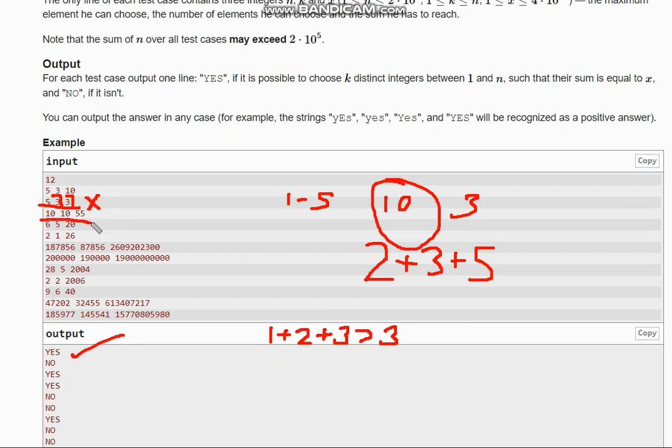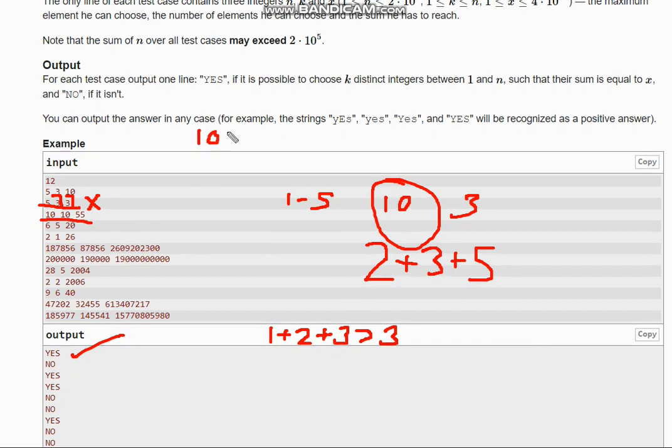Now you take 10, 10, 55. So you know that the sum of 10 elements, that is 10 into 10 plus 1 by 2, it is 55. So if we take all the 10 elements it will lead to 55 and we will output yes.